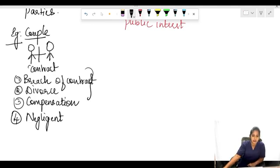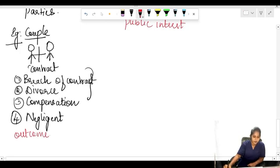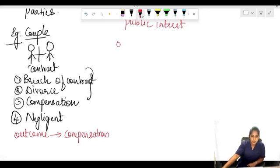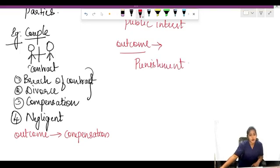What is the punishment here or what is the outcome for this one and for the criminal law? The outcome for the civil law is compensation, whereas your criminal law outcome is punishment because it is going to be big, so they will be awarded with punishment.